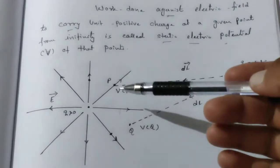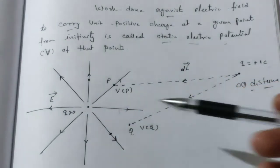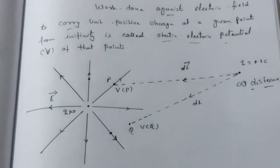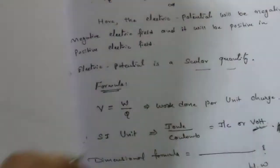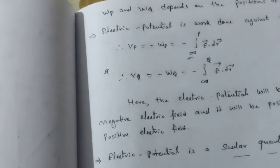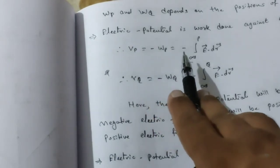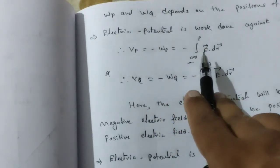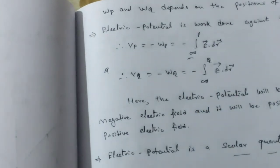When a unit positive charge is brought from infinite distance to a particular point P in an electric field, the potential produced is known as electrostatic potential. We found this equation: VP equals minus integral from infinity to P of E dot dR.